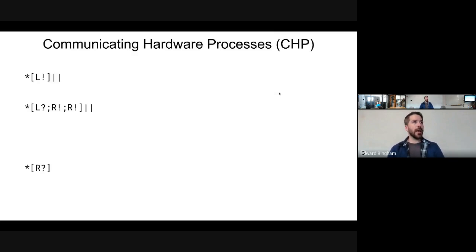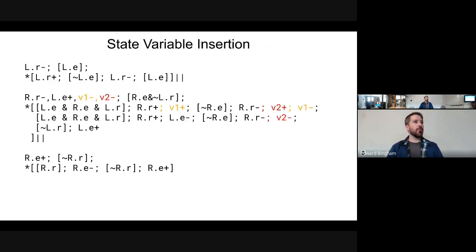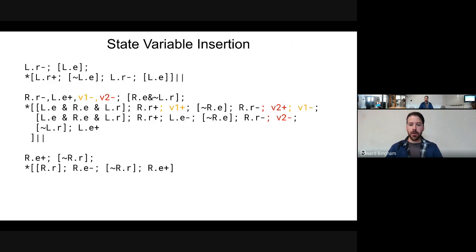Previously, we've taken a CHP specification - the same one presented in the last lecture - generated a reshuffled handshake expansion, and run it through HSE sim and HSE encoder to do state variable insertion so we can have a fully specified state space with unique encodings for each place.